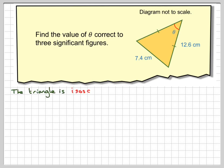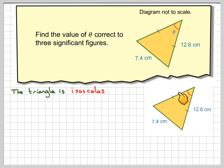The triangle is isosceles, so what you do is you split it into two identical right-angled triangles.